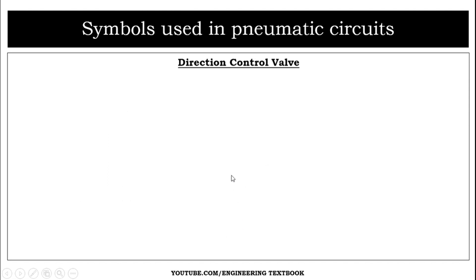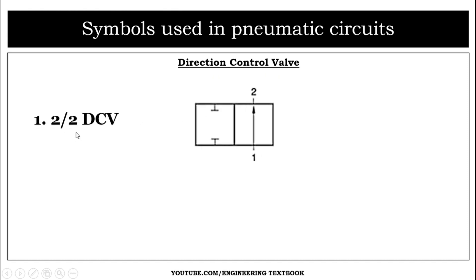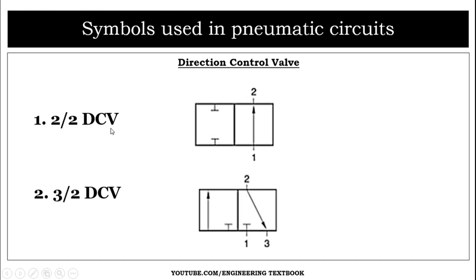Our next category is direction control valves, or DCVs. The first is the two-by-two DCV, which has two ports — one inlet and one outlet. The second is the three-by-two DCV, which has three ports — two inlets and one outlet port.